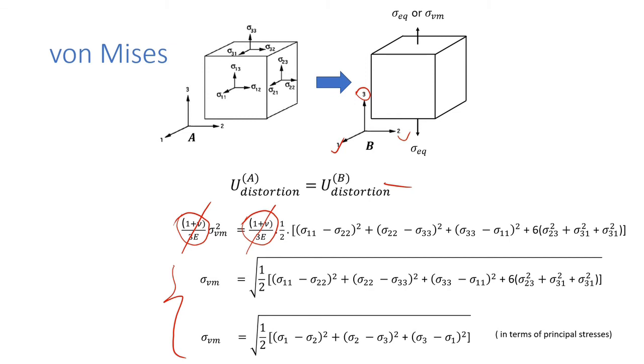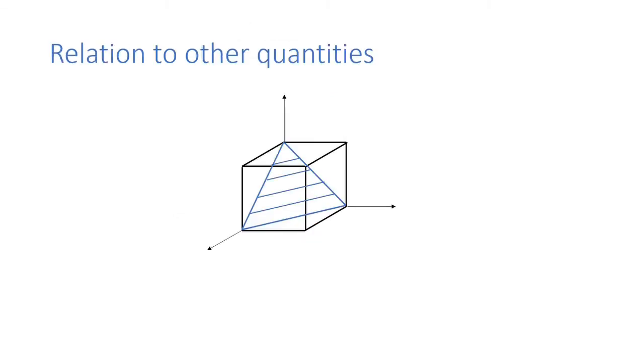Lastly, I would also like to show you some of the other quantities related to von Mises stress. Shown here is an infinitesimal cube with respect to the principal axis and this plane here is called the octahedral plane. If you calculate the resultant shear stress along this plane which is also called as the octahedral shear stress, you will see that it miraculously relates to the von Mises stress and also the J2 invariant.